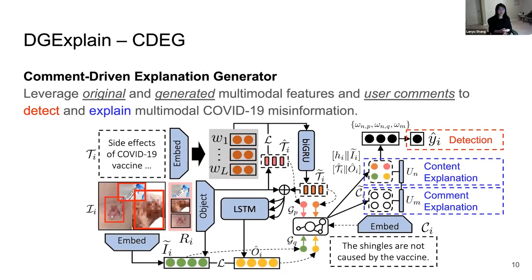In the comment-driven explanation generator module, we leverage the original and generated multimodal features together with user comments to perform detection and explanation of multi-modal COVID-19 misinformation. We design a dual-generative content-comment graph to explicitly model the relationship between the multimodal content and user comments for the detection and explanation.